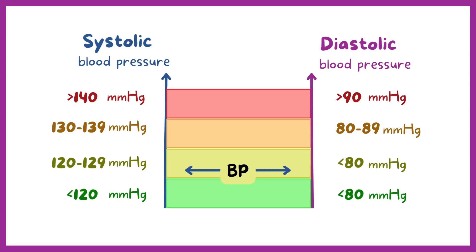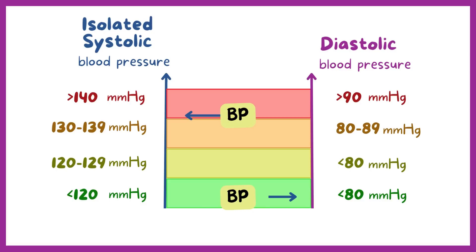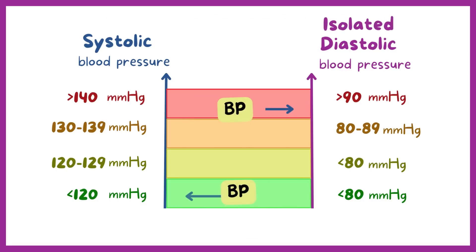Typically both systolic and diastolic blood pressure tend to climb or fall together, but that's not always the case. Sometimes one side is normal and the other is really high. This is referred to as isolated systolic hypertension or isolated diastolic hypertension.